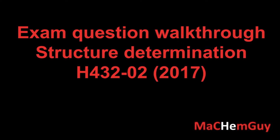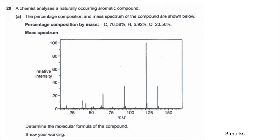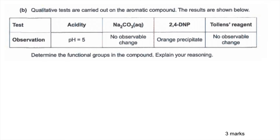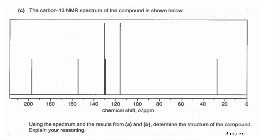I've got an exam question walkthrough here — it's the structure determination question from the OCR paper, the organic paper from 2017. I'll scroll through the three slides the three parts of the question are on. If you want to pause the video, have a go, and then play on for the answers. Part A is worth three marks, part B also worth three marks, and part C also worth three marks.